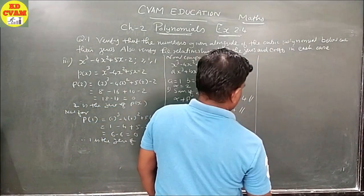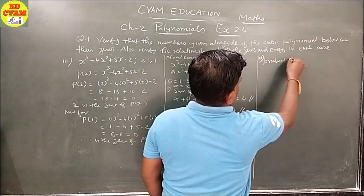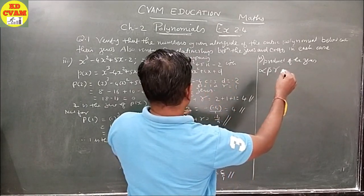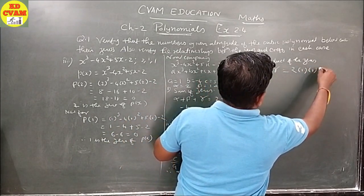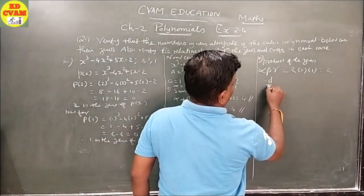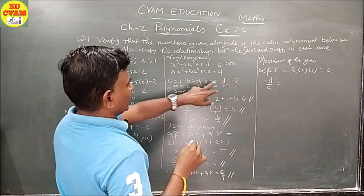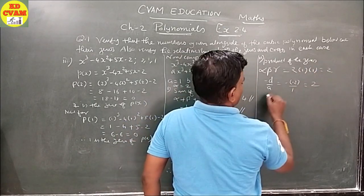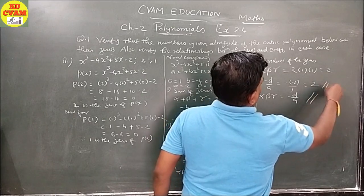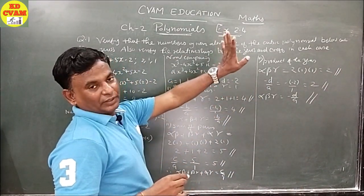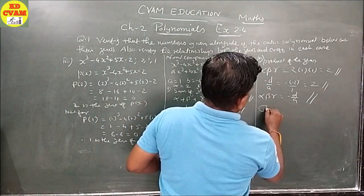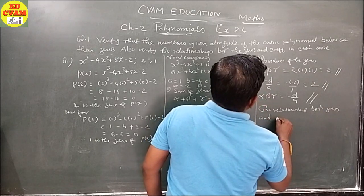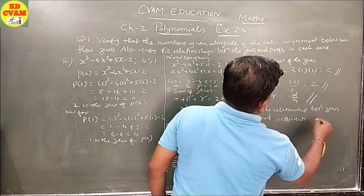Product of zeros: alpha·beta·gamma = 2 × 1 × 1 = 2. As per the formula, -D/A = -(-2)/1 = 2. Therefore alpha·beta·gamma = -D/A is verified. The relationship between zeros and coefficients are verified.